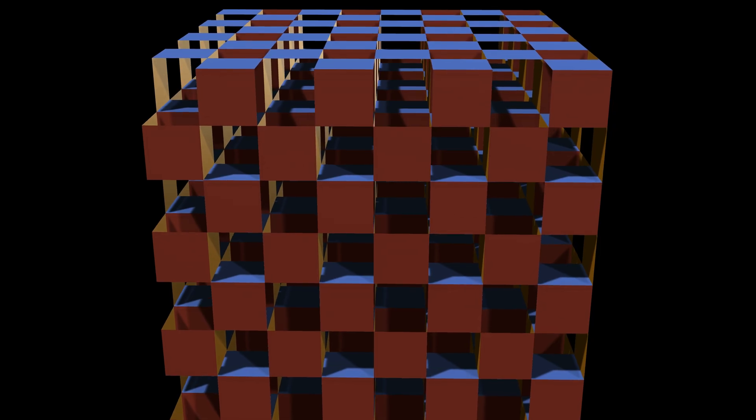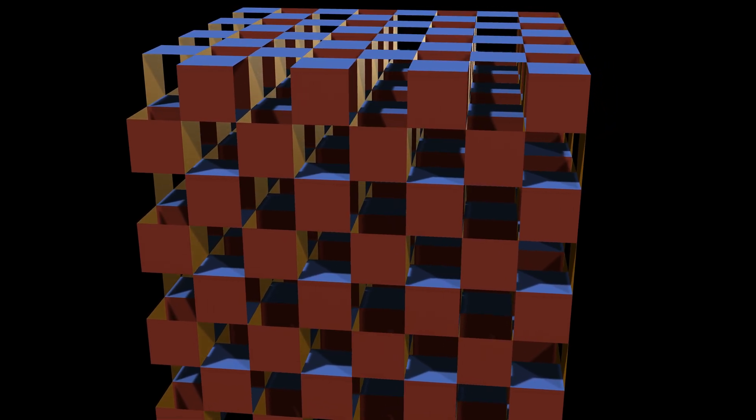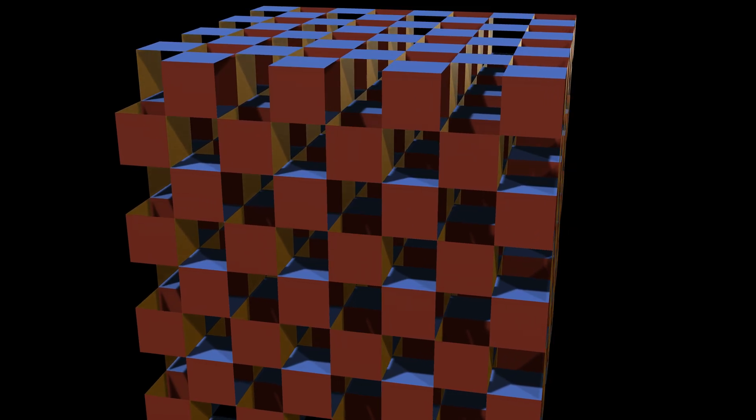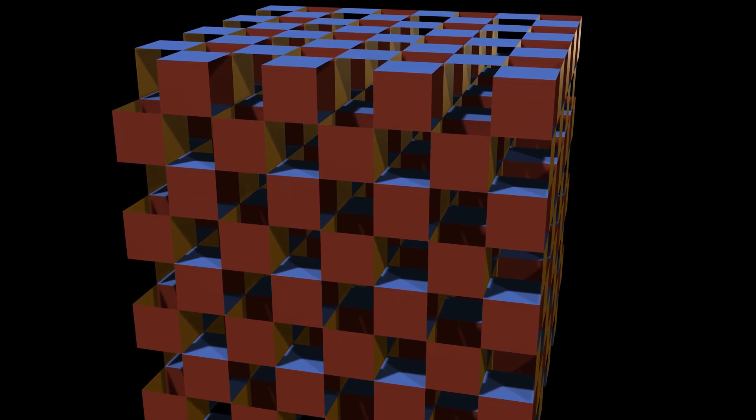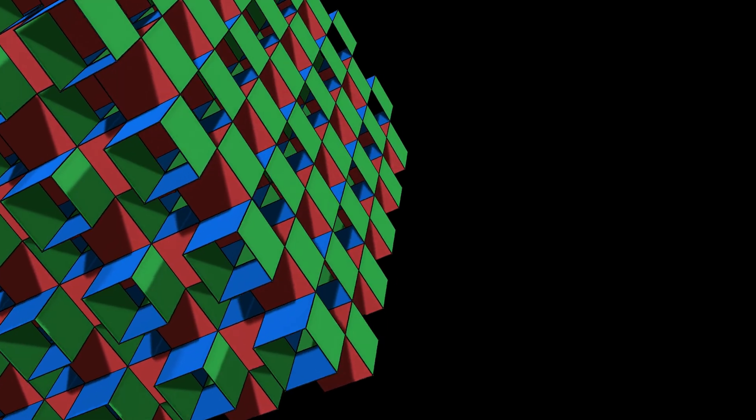Every face identical, every edge identical, every vertex the same, with six squares meeting at each. A real mu-cube extends endlessly in all directions, filling all of space, so it cannot be observed from the outside, because it has no outside.